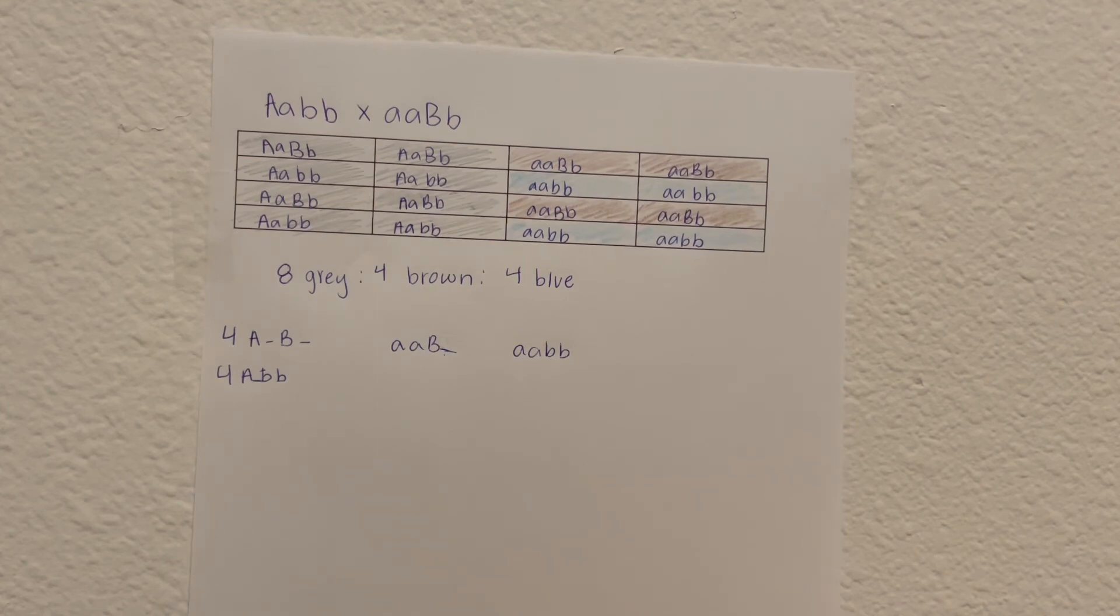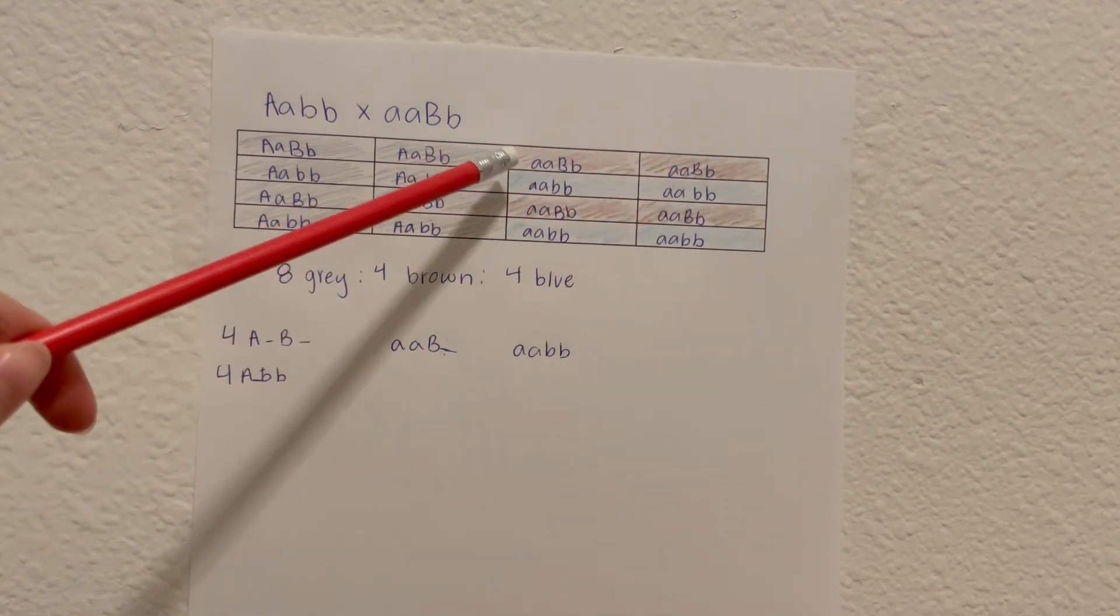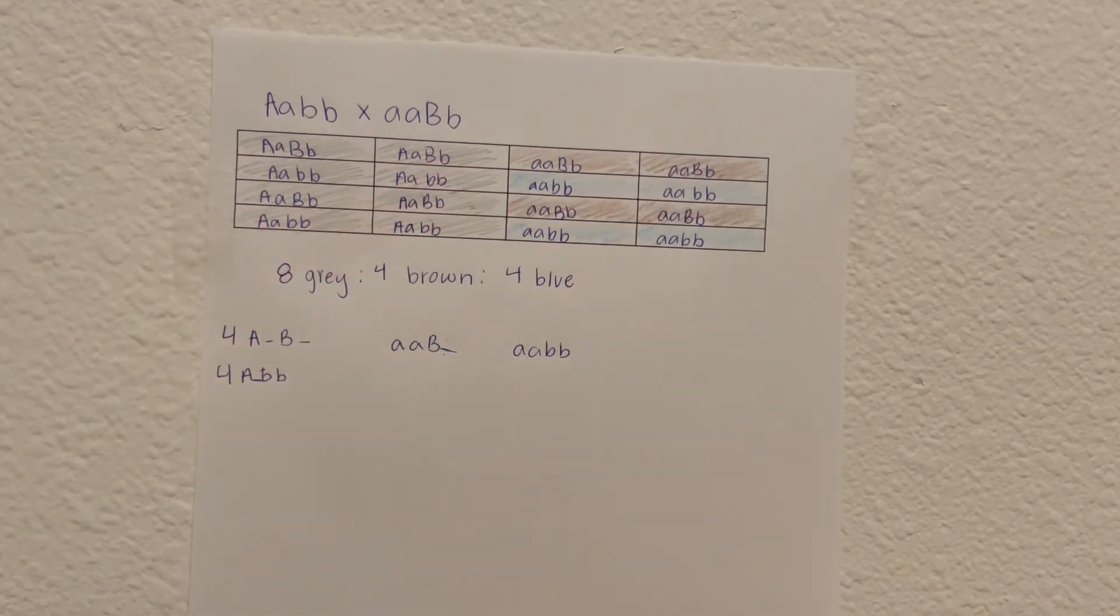We are getting four brown phenotypic sharks this time. As you can see, we have the four capital B's here with the lowercase a's to go with them.